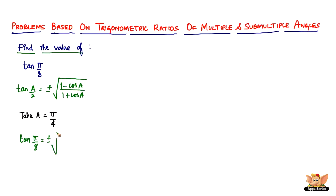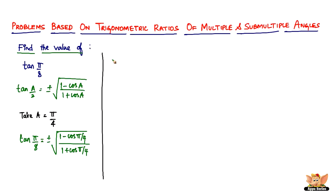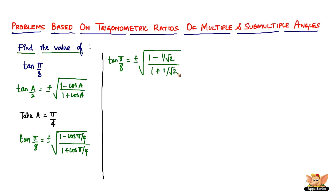So tan(π/8) equals plus or minus the square root of (1 minus cos(π/4)) divided by (1 plus cos(π/4)). Now cos(π/4) is cos 45°, which is a standard angle equal to 1/√2. Substituting, we get tan(π/8) equals plus or minus the square root of (1 minus 1/√2) divided by (1 plus 1/√2).